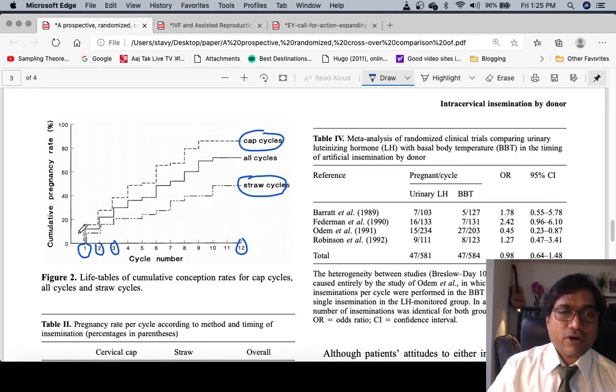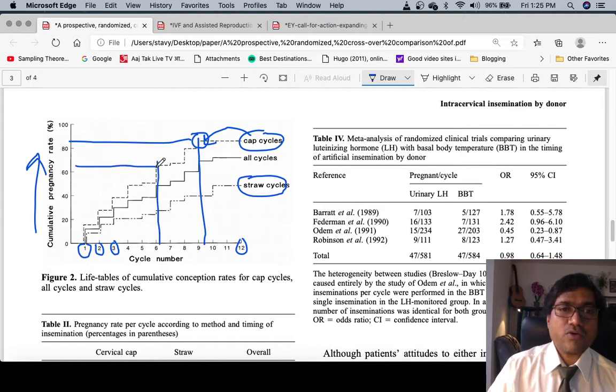Now if I draw the line here on the ninth cycle, with the cervical cap method you see it is more than 82% success rate. In five to six cycles it is around 60% success. So this is a method which will always give success if you use it for five to six cycles.